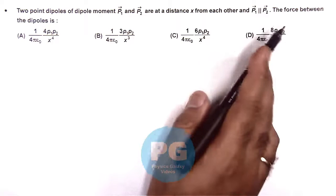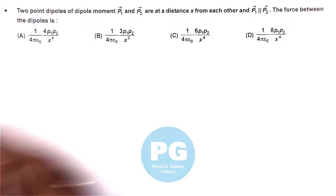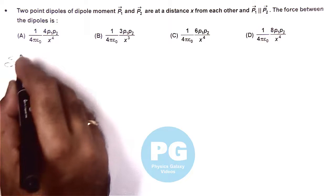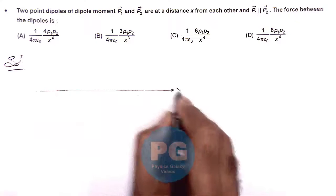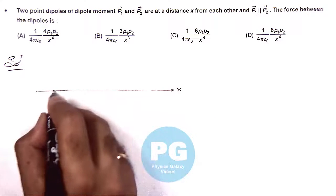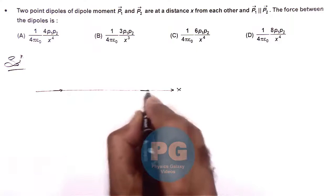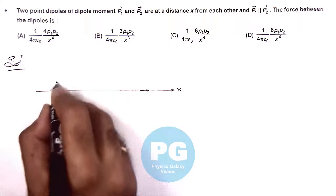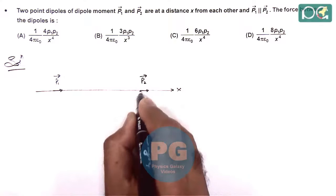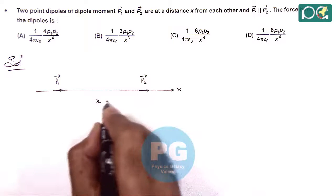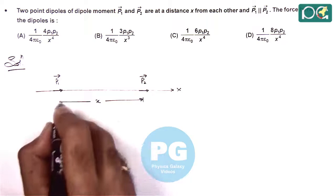It is asking the force between the dipoles. In solution, if we visualize the case, in the x direction one dipole is here, another dipole is here, they are parallel to each other. This is p1 vector, this is p2 vector, and they are located at a distance x from each other.